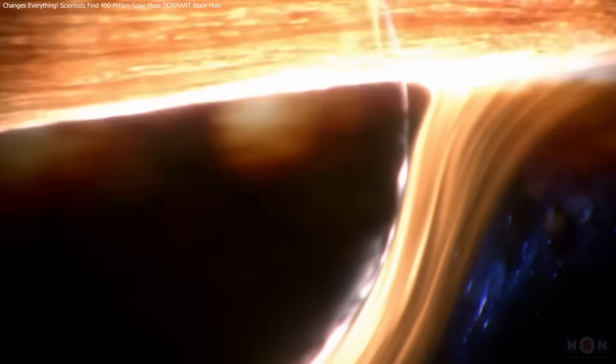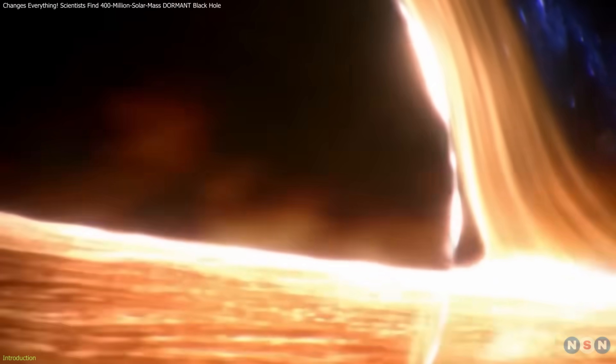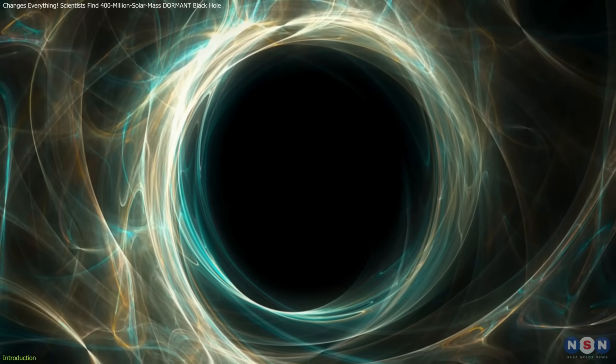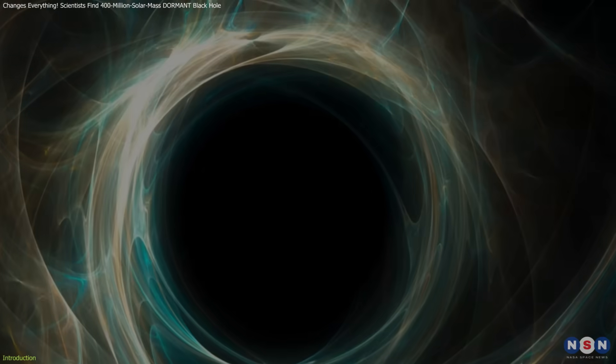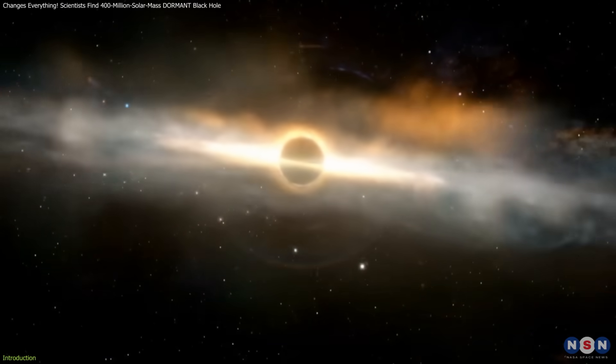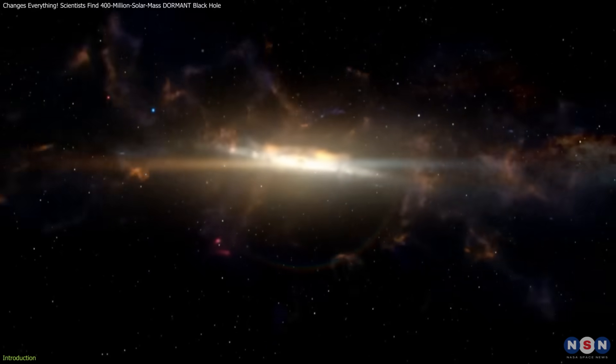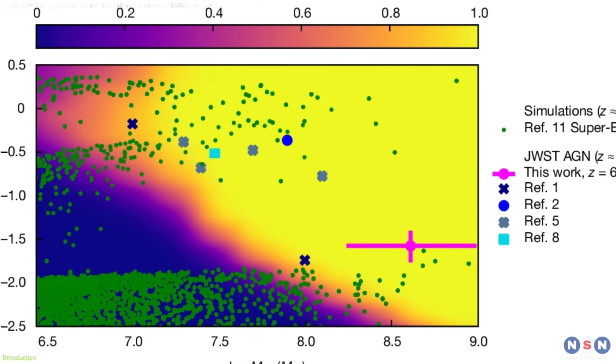Imagine a massive cosmic beast, a black hole weighing 400 million times the mass of our Sun, lying dormant just 800 million years after the Big Bang. Discovered by the James Webb Space Telescope, this remarkable find has opened new doors to understanding how black holes and galaxies form and evolve in the universe.